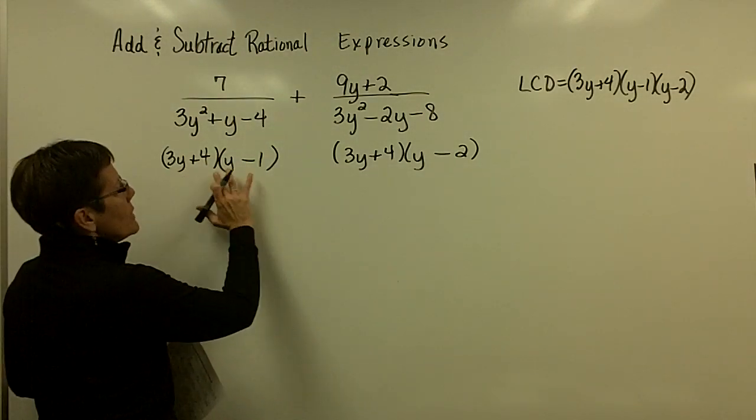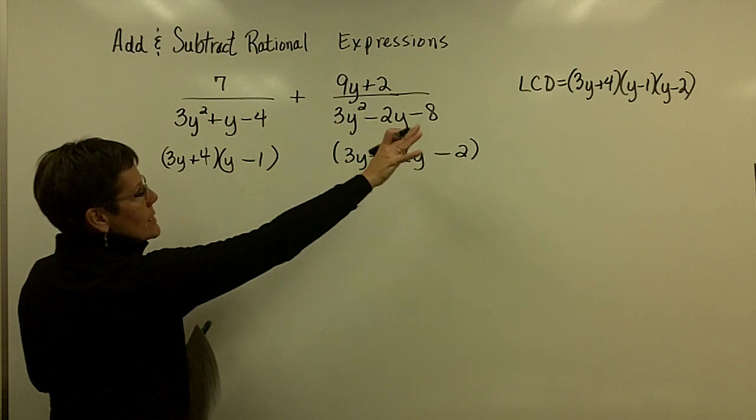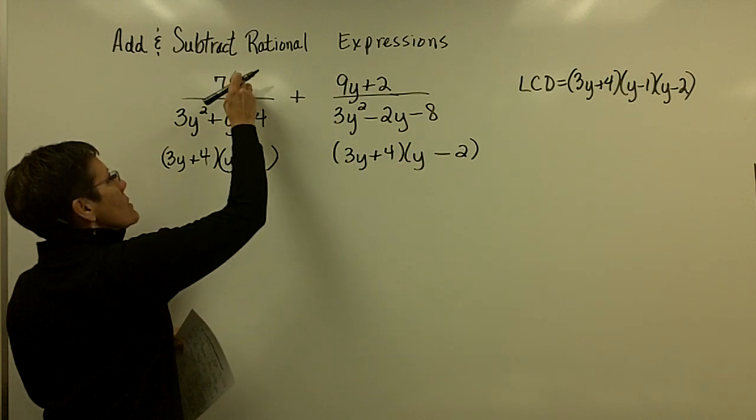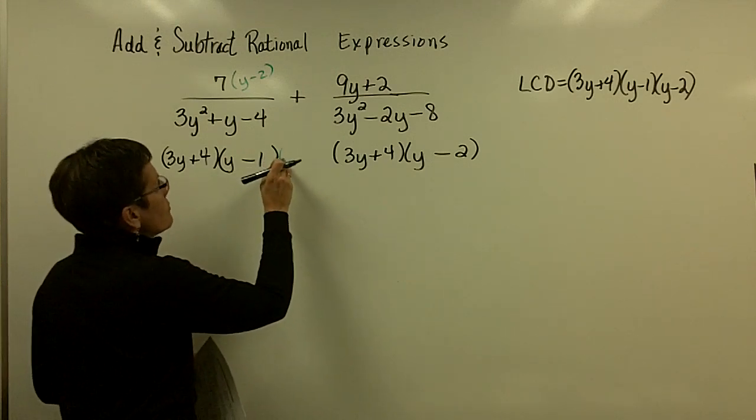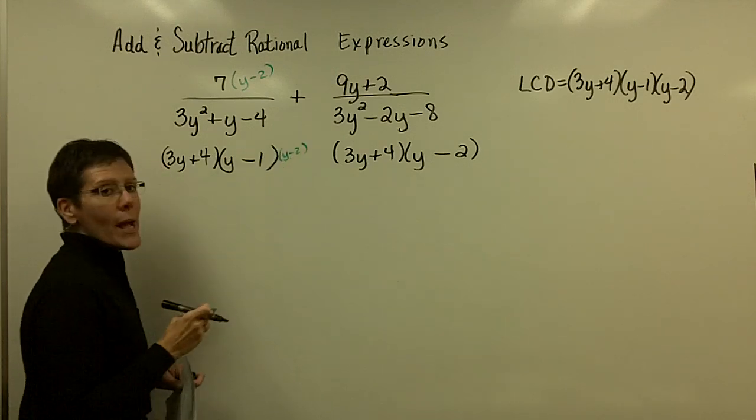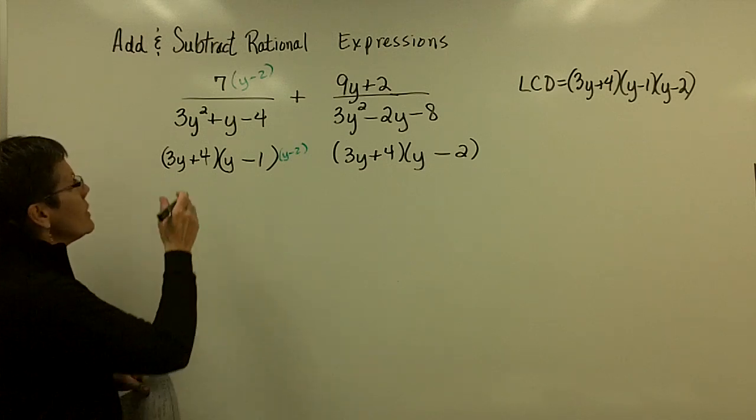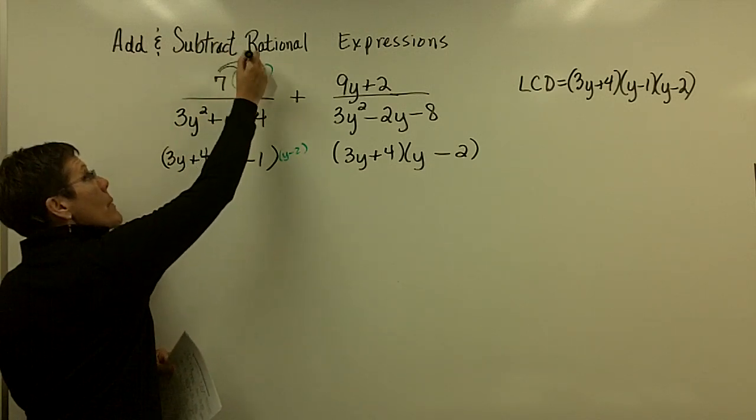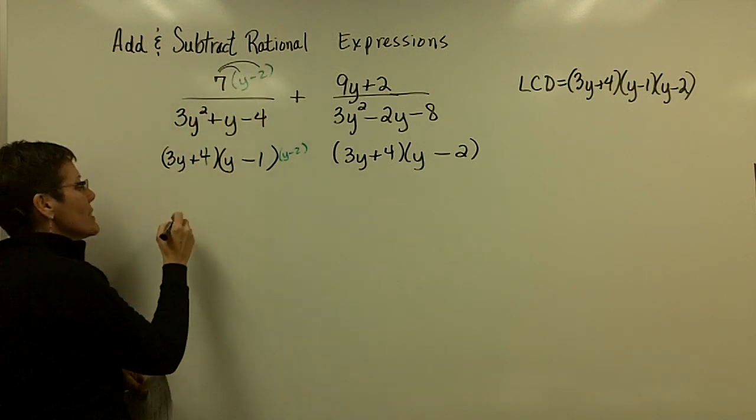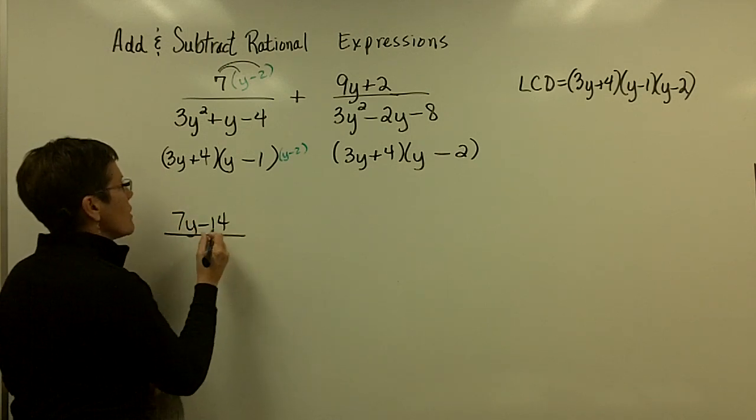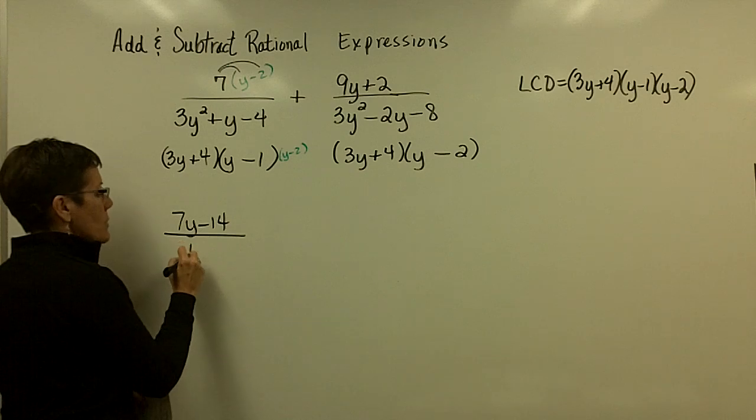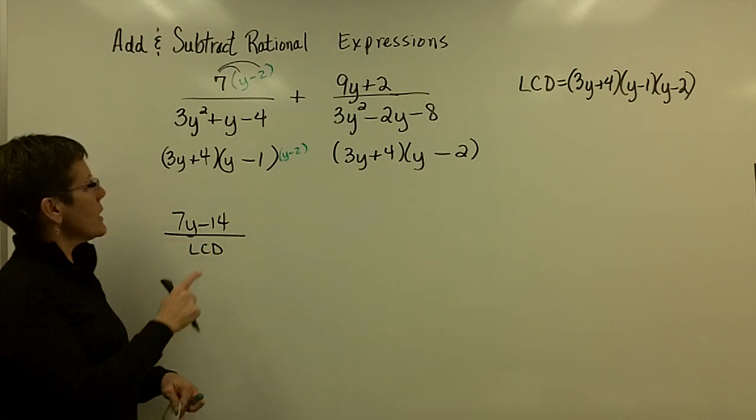So, this denominator is missing the y-2. Remember, you're getting that y-2 in that denominator. So, that's going to be called a 7y-14. Again, that's what people forget to do. So, 7y-14. I need to save myself a little bit of space. And, I'm going to say to myself that this now has the LCD. It's got these two in that third binomial.